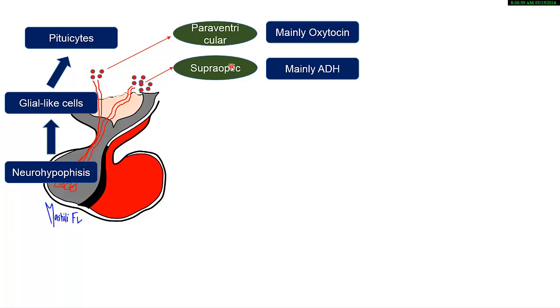What you need to note is the fact that each of these nuclei can produce one-sixth of the other hormone. What I mean is, paraventricular nuclei produce mainly oxytocin, but they can also produce one-sixth of ADH. The same for supraoptic nuclei—they produce mainly ADH, but they can also synthesize one-sixth of oxytocin. That is a take-home message.